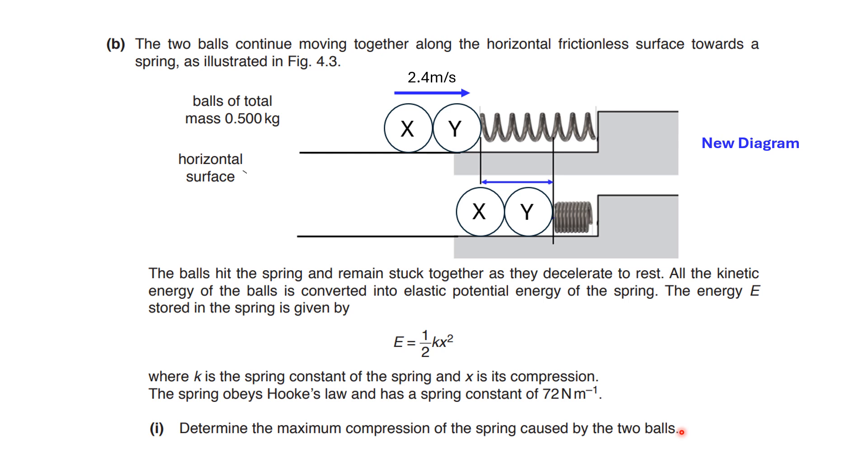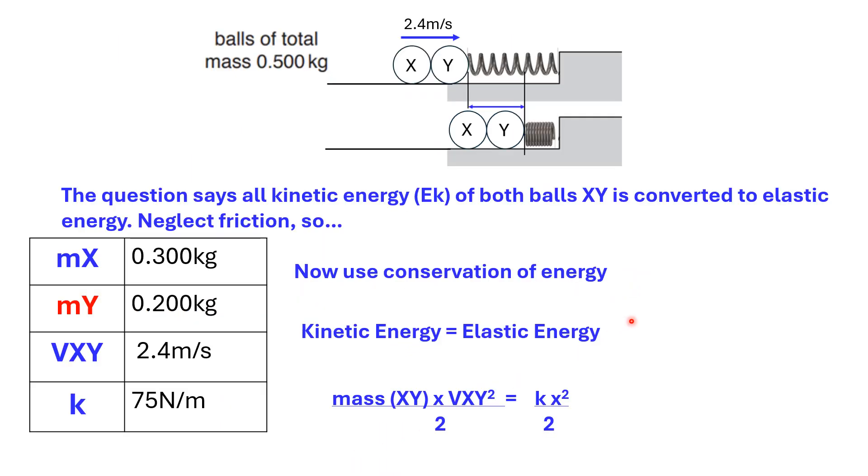A couple of points here. First one, no energy is lost due to friction. For this reason, all kinetic energy is converted to elastic energy. The second point, the spring compresses according to Hooke's law. It means that the force exerted by the spring is directly proportional to the amount of compression. To calculate the maximal compression, let's use the conservation of energy, where the kinetic energy is equal to the elastic potential energy.